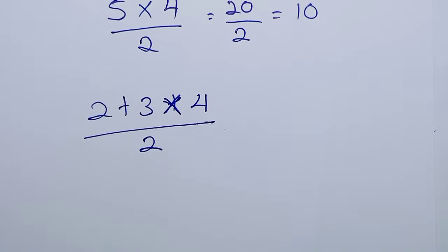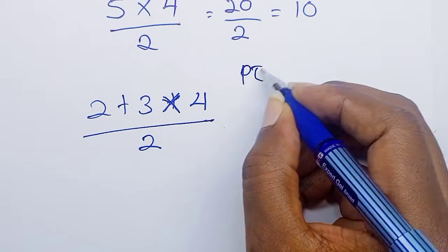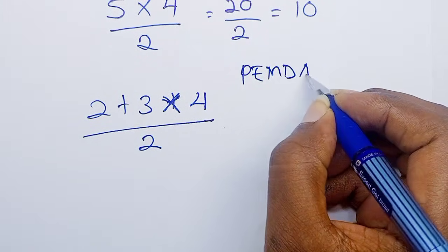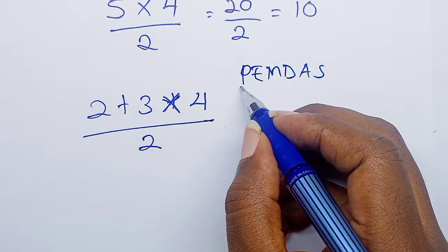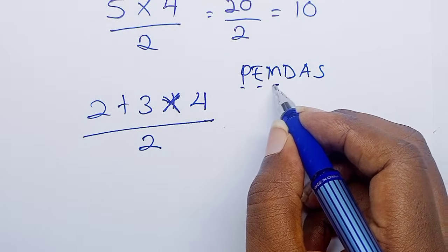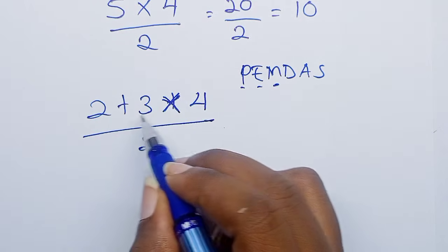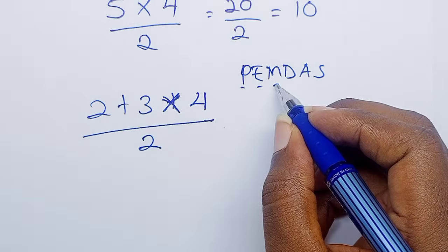Okay, so according to the order of operations, which is PEMDAS, we have parenthesis - which we don't have - exponents - we don't have - multiplication. So in our case, in the numerator, we have addition and multiplication. As you can see, multiplication is here, addition is here, so we have to work out multiplication before we work out addition.